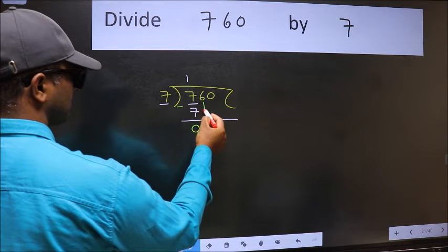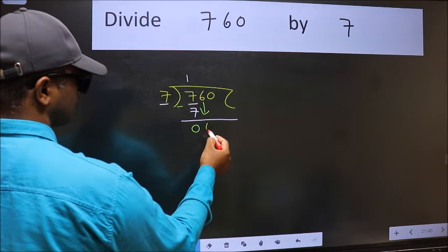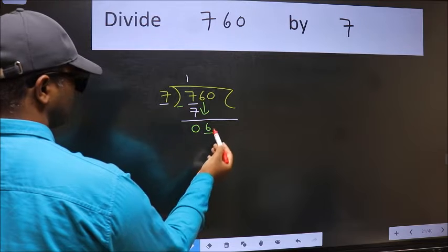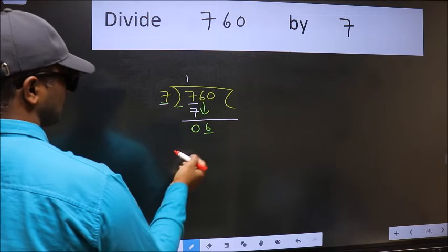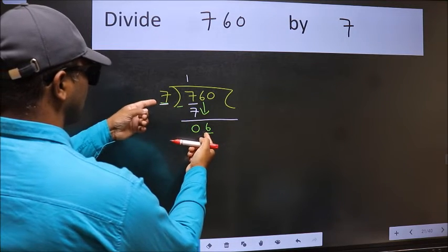After this, bring down the next number. So 6 down. Now here we have 6 and here 7. 6 is smaller than 7.